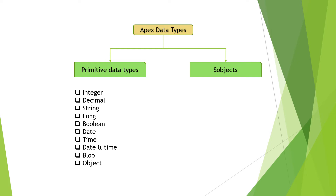The date data type stores date values in the standard date format. For time values, we can use the time data type. For date and time combined, we can store hours, minutes, seconds, and milliseconds using the date-time data type.